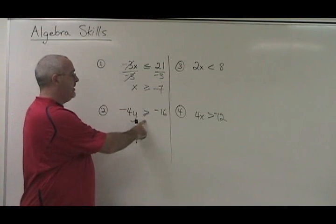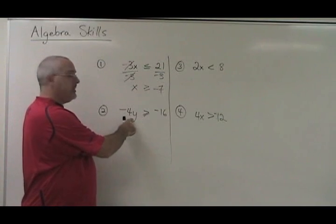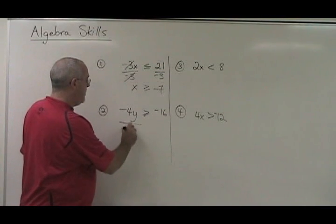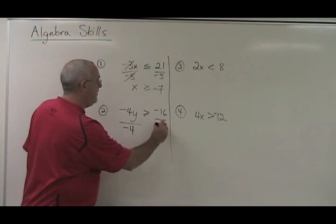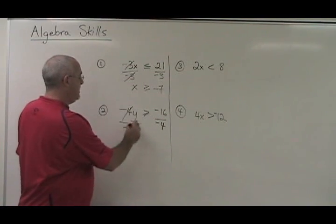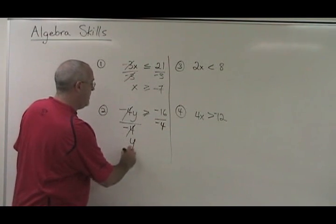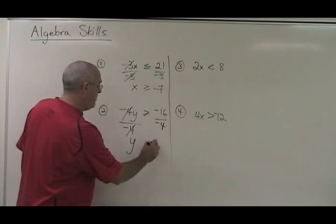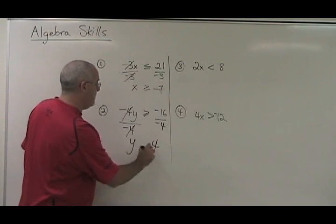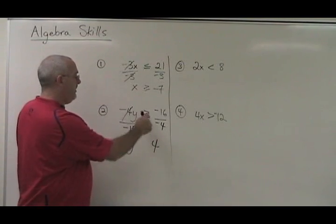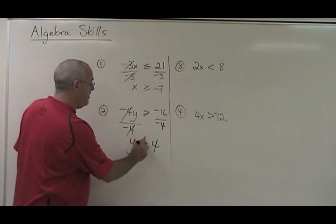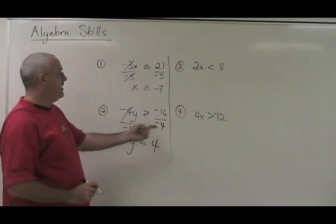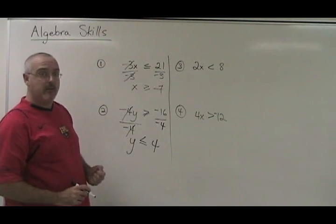Here's another example. My y has been multiplied by negative 4. I divide both sides by negative 4. These cancel. y is isolated. Negative 16 divided by negative 4 is positive 4. But I have to turn this sign backwards, because I divided both sides of the equation by a negative number.